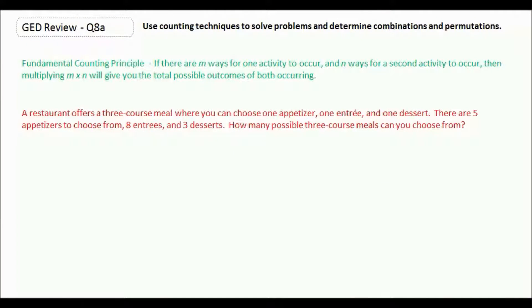The fundamental counting principle says if there are m ways for one activity to occur and n ways for a second activity to occur, then multiplying m times n will give you the total possible outcomes of both occurring.